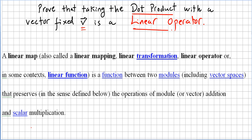Okay, let me quickly explain what a linear operator is. A linear map, also called linear mapping or linear transformation or linear operator, that's the expression we are using here, or in some other contexts, linear function. At the end of the day, a linear operator is a linear map, or a linear map is a function between two modules.